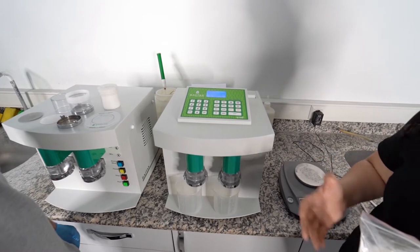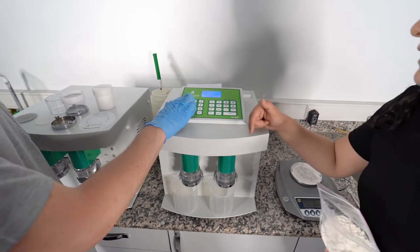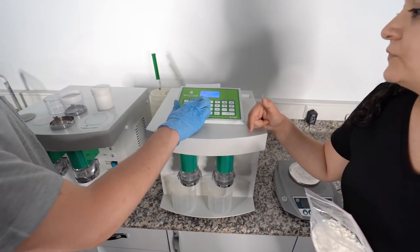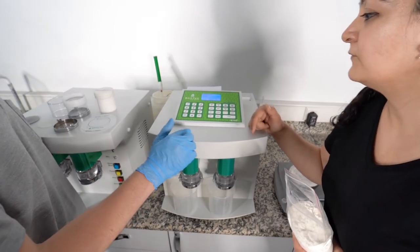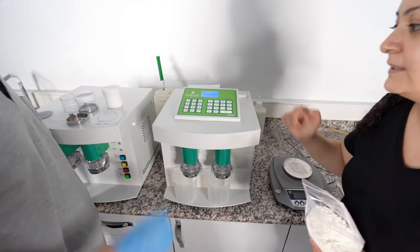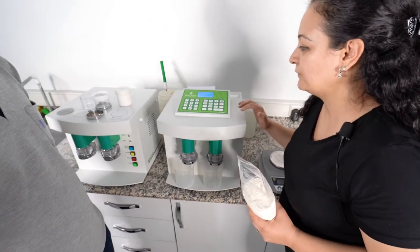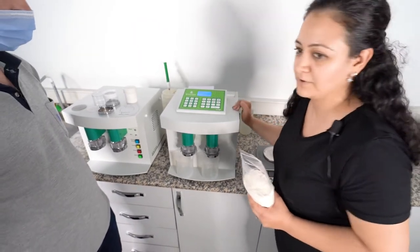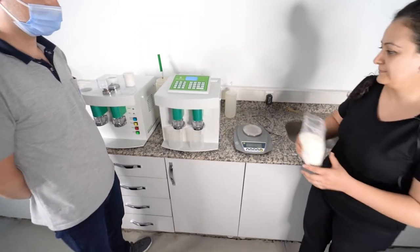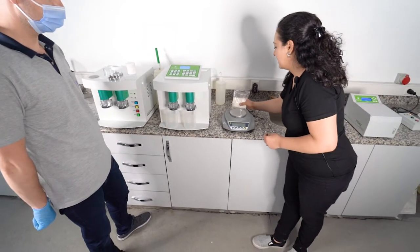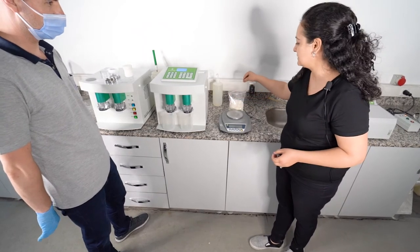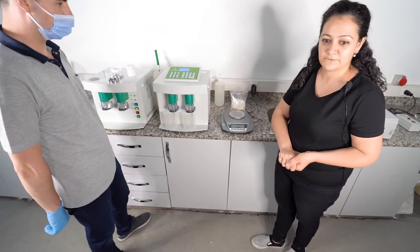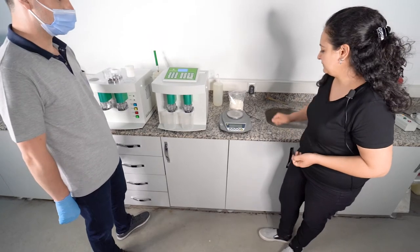But our moisture is different than 14, so we will enter our moisture 13.5. The machine says you should weigh 9.94 grams. You should take your sample homogeneously from different points, from five different points we can take our sample.